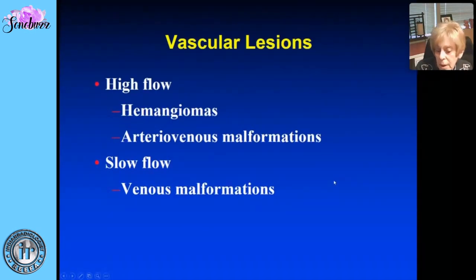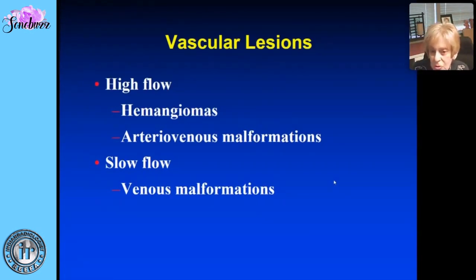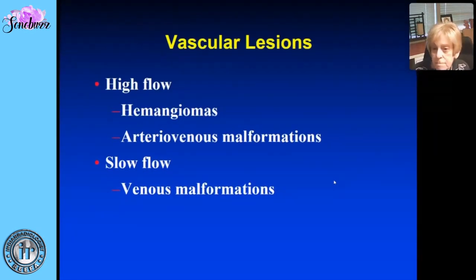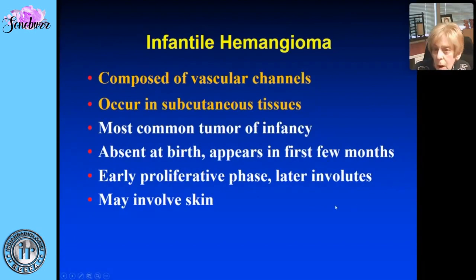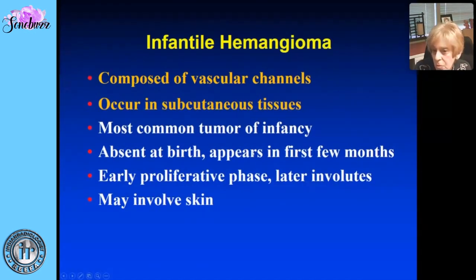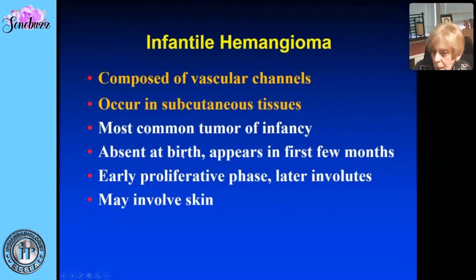The second category is vascular lesions. We'll look at high-flow lesions — hemangioma and arteriovenous malformations — and one slow-flow lesion: venous malformation. Infantile hemangioma is the most common vascular lesion. It simply contains lots of vascular channels, occurring in the subcutaneous tissues, and is one of the most common vascular tumors of infancy.